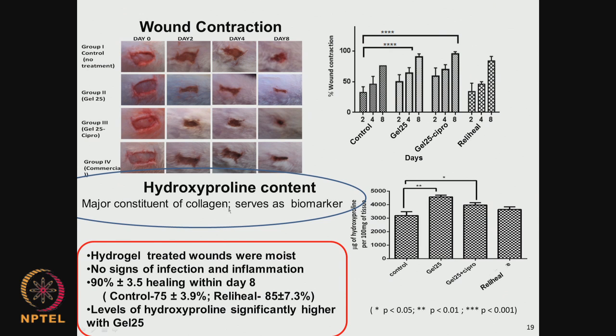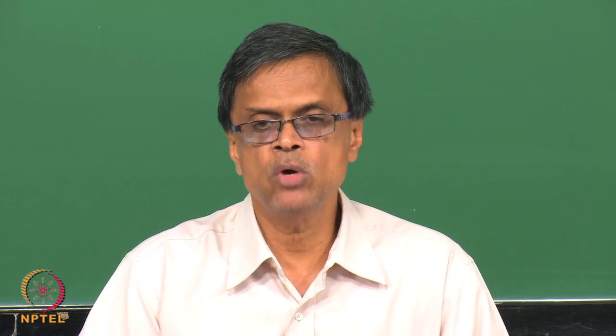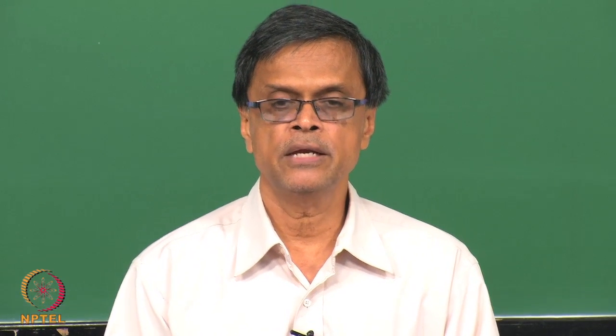The hydrogel treated wounds are moist, with no sign of infection or inflammation, and the healing rate is very high - almost more than 90 percent in 8 days compared to the control or commercial products. The high level of hydroxyproline gives an idea about the increase in collagen buildup and coverage of the wound. I have given you a few case studies where use of small animals is extremely important before one goes into human volunteers. These studies with small animals mostly look at cytotoxicity, biodegradation of polymer, wound healing properties, and tissue formation.